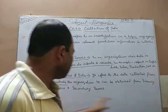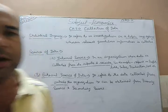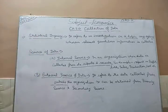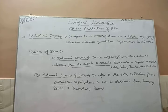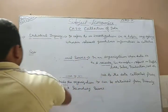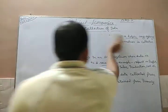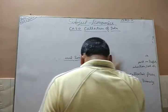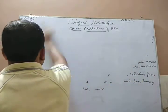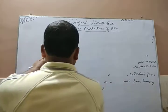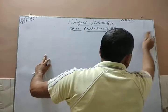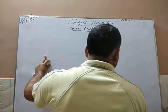External source of data can be obtained through two methods: primary source of data and secondary source of data. So there are two types of data — primary and secondary. When you collect external data, either it is primary or it is secondary source.